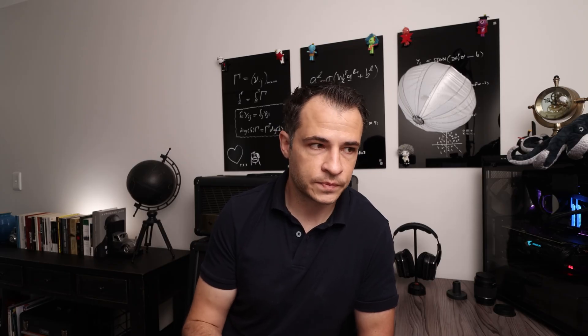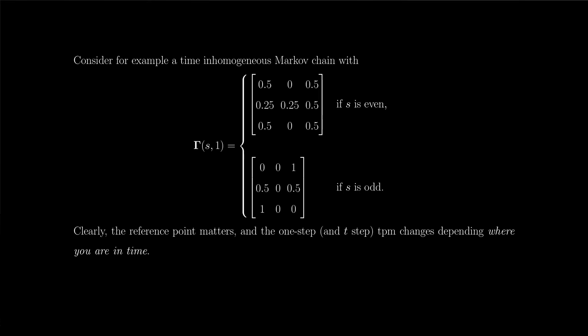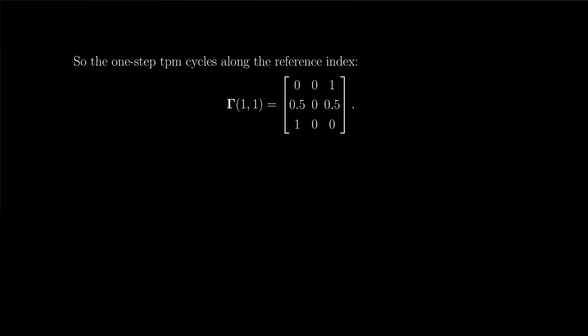Now if this is the case, such a process is said to be a time inhomogeneous process. So to see what this is, consider a process with a one-step transition probability matrix, which assumes one set of values when the reference point in time is even, and another set of values when the reference point in time is odd. Clearly here, the reference point matters, right? And the transition probability matrix, which describes the model, will change depending on where you are in time, and it'll cycle between two configurations. So clearly, this is a time inhomogeneous process.